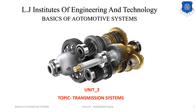We basically divide gearboxes into two parts: manual type and automatic transmission system. In manual transmission system, there are basically three types: first is a sliding mesh gearbox, second is a constant mesh gearbox, and third is the synchromesh gearbox. For automatic, we have CVT, torque converter, and selector mechanism, and then we move to the electrical drive.